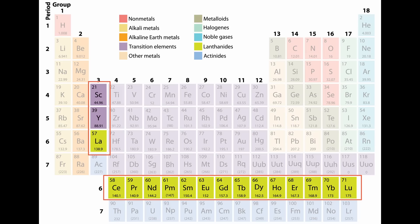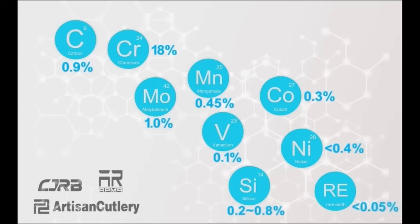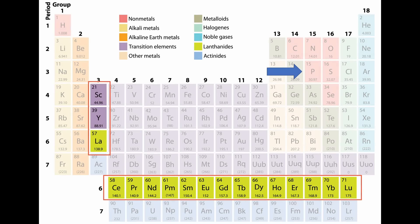But very shortly after that Instagram video, they clarified to Knife Newsroom that the rare earth elements were phosphorus and sulfur. Now phosphorus and sulfur are not rare earth elements. No one calls them rare earth elements. I've never heard anyone say that they're rare earth elements. So there's no rare earth elements in this steel as far as we know.